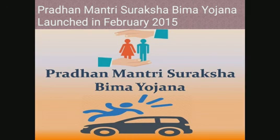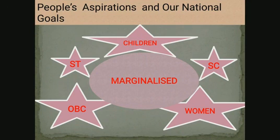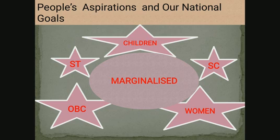These are the schemes and programs launched by the government for the development of the weaker sections in our country. In this unit on Safeguarding the Marginalized, we understood the definition of marginalized and learned about who the marginalized categories are. On your screen, you can see the marginalized categories in our country: children, Scheduled Castes (SC), Scheduled Tribes (ST), Other Backward Classes (OBC), and some minorities are the marginalized people in our country.